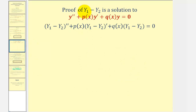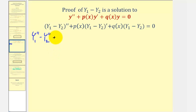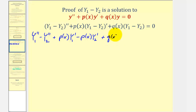To do this, we're going to substitute this difference for y, which means instead of y double prime we'll have y double prime of the difference, instead of y prime we'll have y prime of the difference, and instead of y we'll have this difference. For the next step, we're going to clear the parentheses. So we would have big Y sub one double prime minus big Y sub two double prime, plus p of x times big Y sub one prime, minus p of x times big Y sub two prime, plus q of x times big Y sub one, minus q of x times big Y sub two, equals zero.